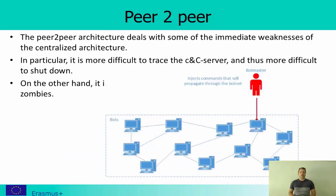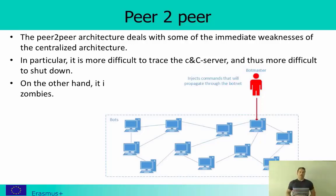In the peer-to-peer architecture, we try to deal with the shortcomings of the centralized architecture. Here you have many machines connected to each other in various connections. The bot master can inject commands to one machine who forwards it to others, and so on. As an infected zombie, you don't know if your command is coming from the bot master itself or just from another infected machine. This makes it more difficult to trace the CNC server and a lot more difficult to shut it down.